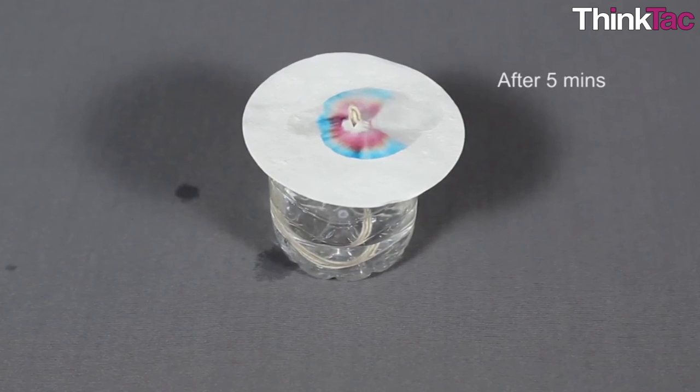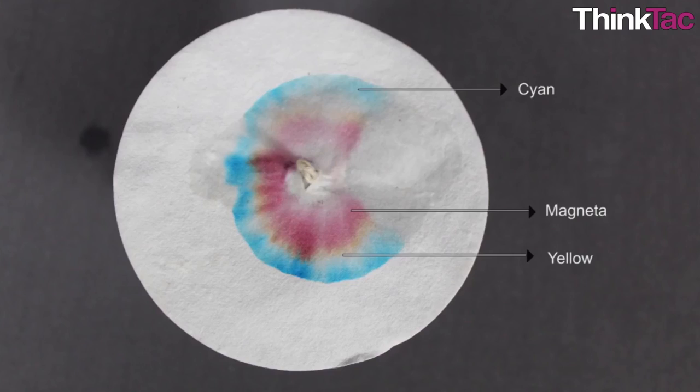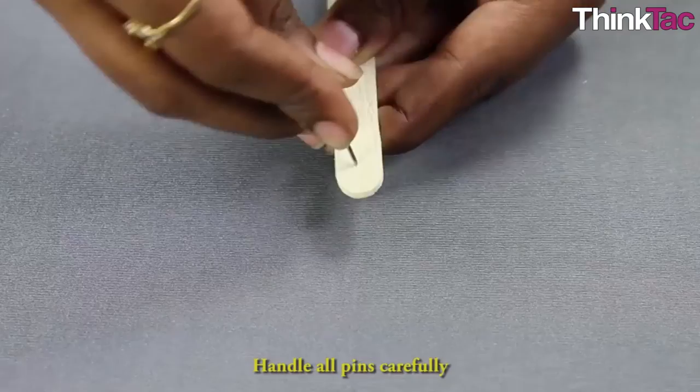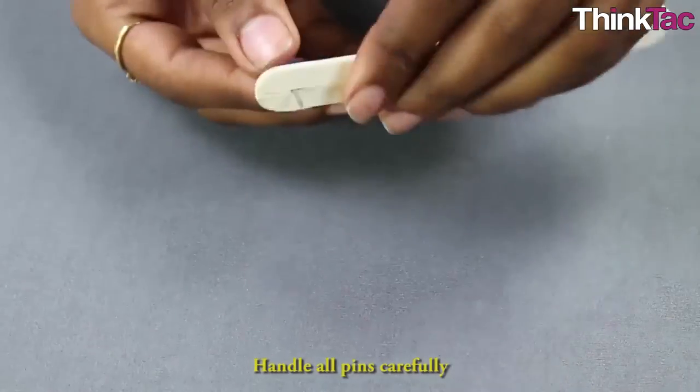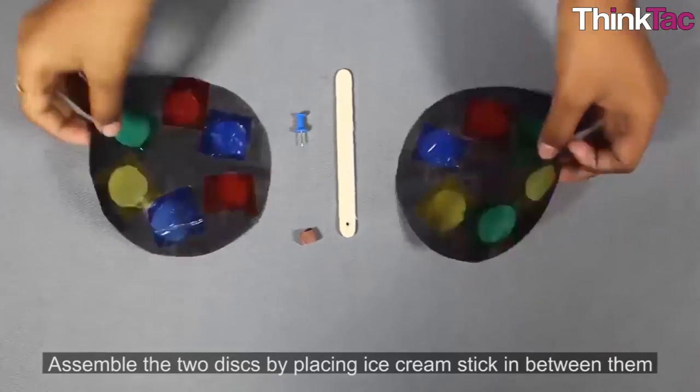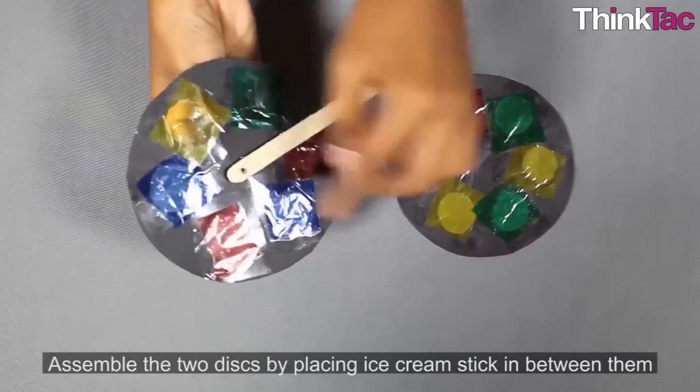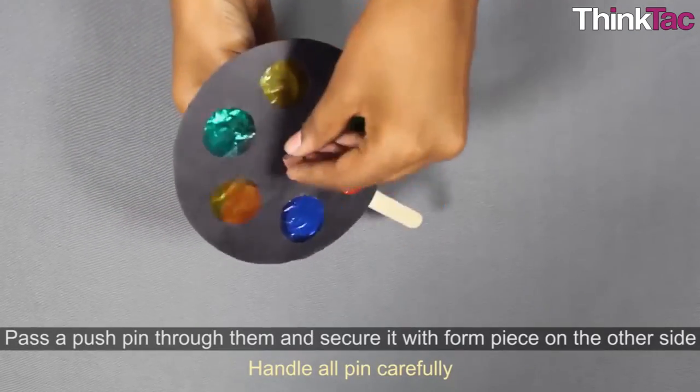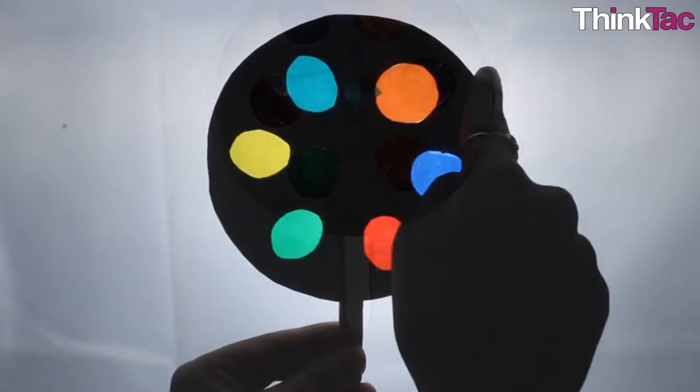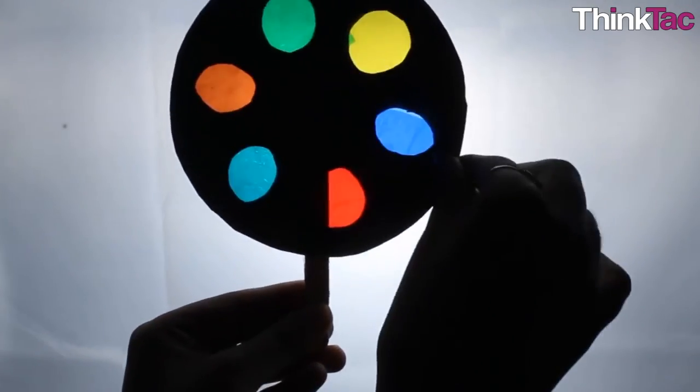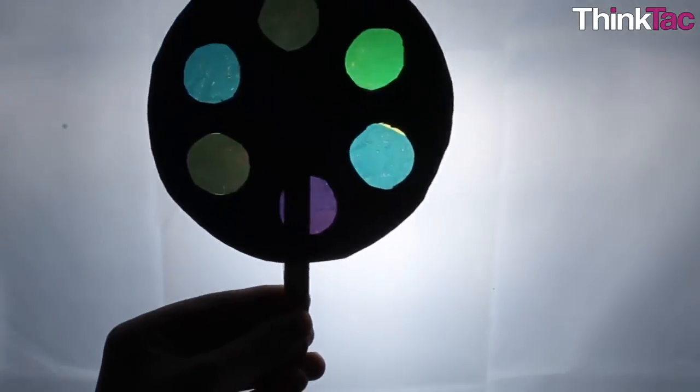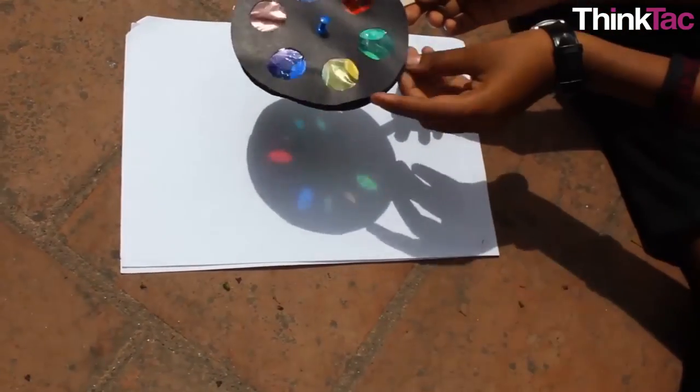We hope that you enjoyed performing these experiments and understood a lot about colors. Color subtraction and color addition are the very basics of the world. You might not have related light and color before, but you now know that color is because of light. If you came up with any interesting experiments or variations regarding color subtraction, do let us know. We'd be happy to see what you've done. Goodbye.